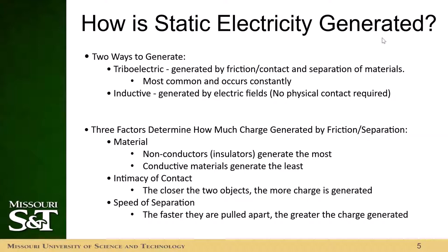Insulators will generate the most charge and conductive materials will generate the least. For the intimacy of the contact, the closer the two objects are, the more charge is generated — this follows the inverse square law, so it'll dissipate quickly as you put distance between yourself and something that might be sensitive. The speed of separation is important as well: the faster they're pulled apart, the greater the charge generated. So there's no need to be moving frantically in the lab.